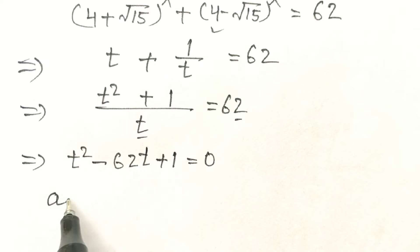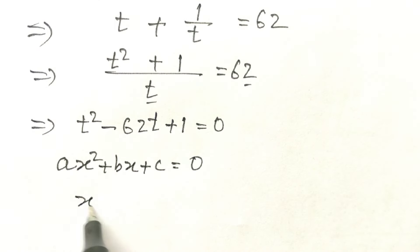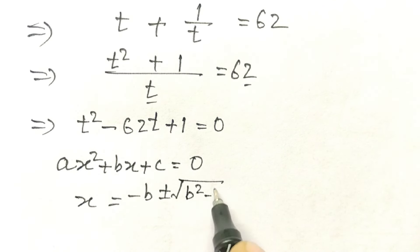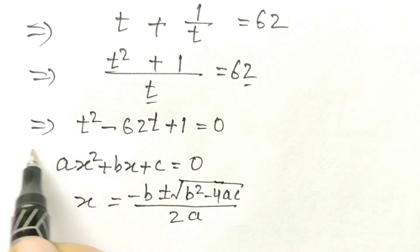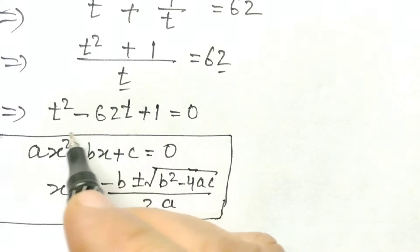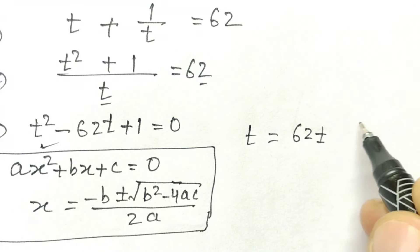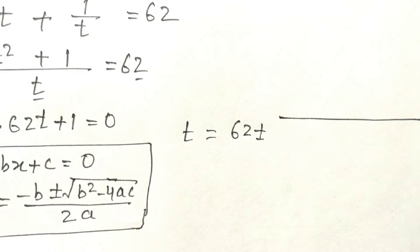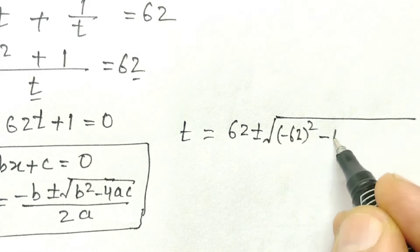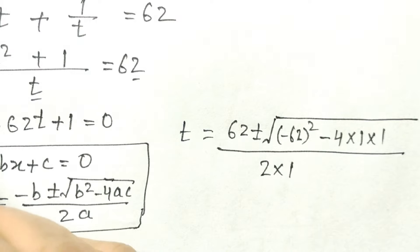Comparing this with the standard quadratic equation ax² + bx + c = 0, we use the quadratic formula: x = (−b ± √(b² − 4ac)) / 2a. So t = (62 ± √(62² − 4·1·1)) / (2·1).